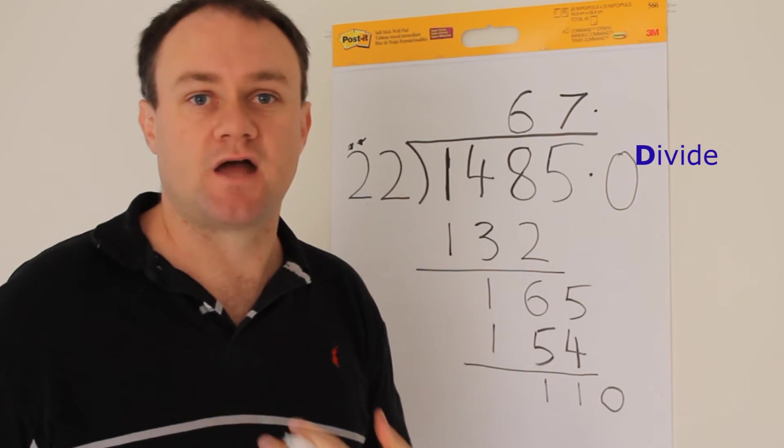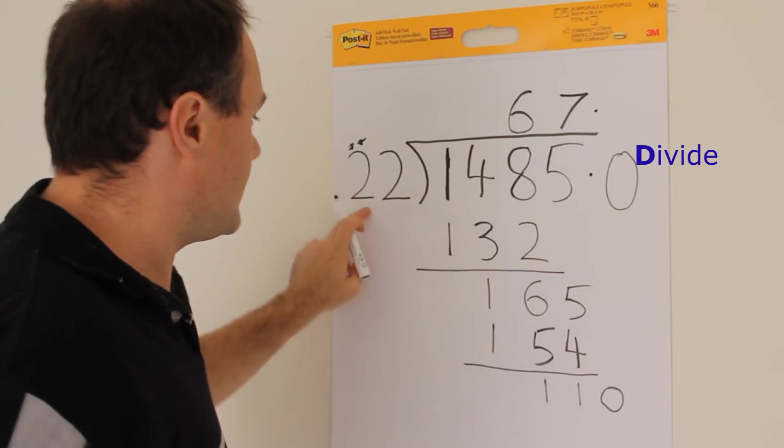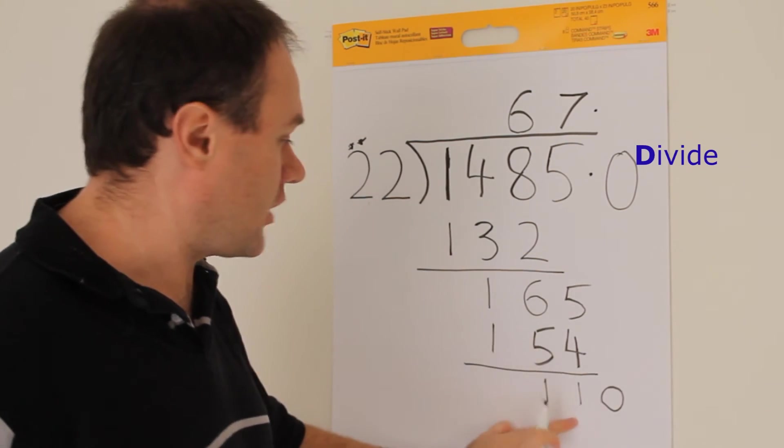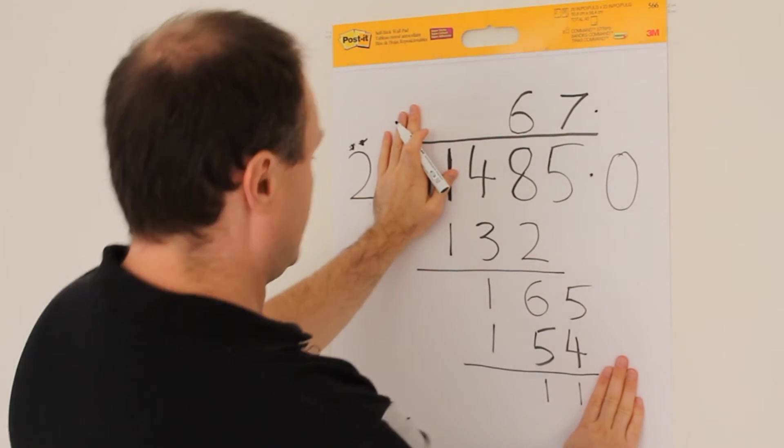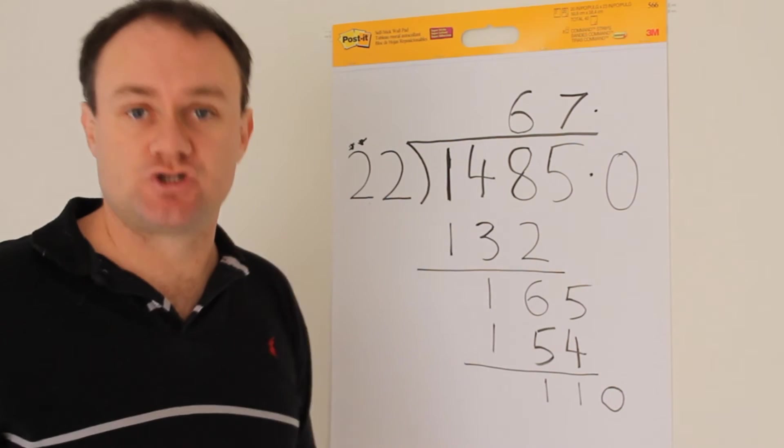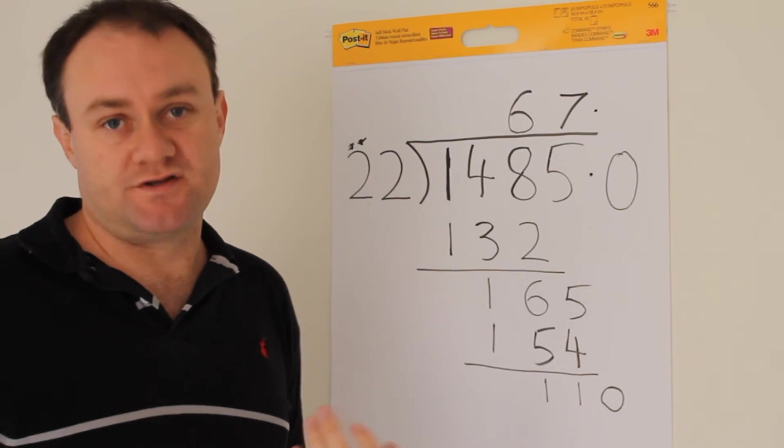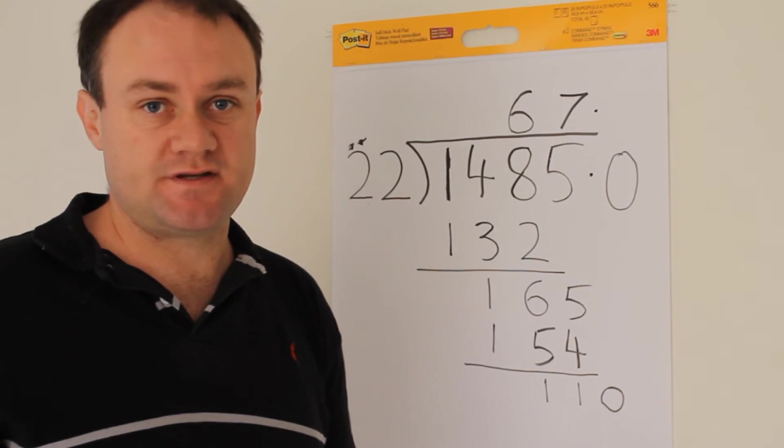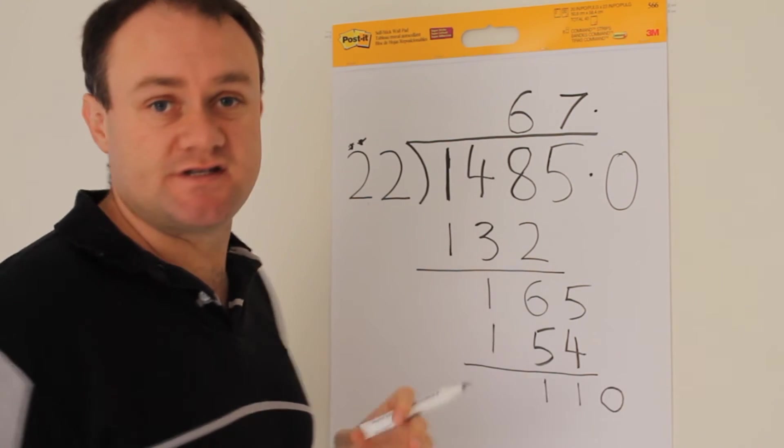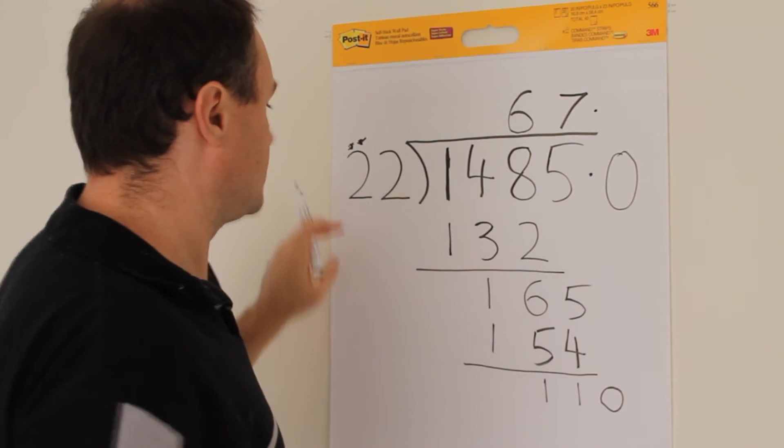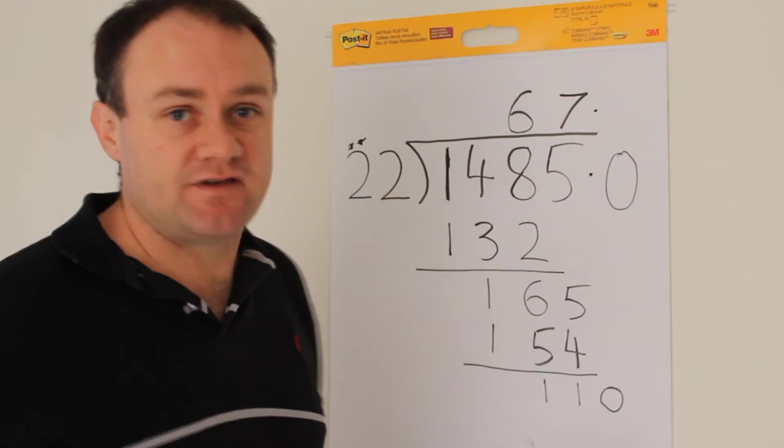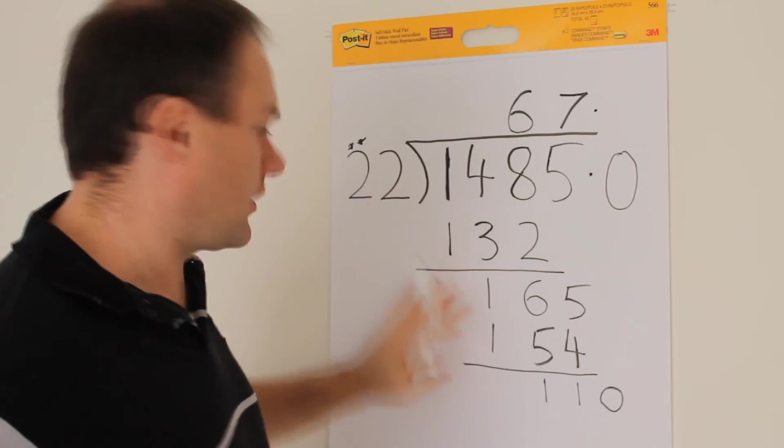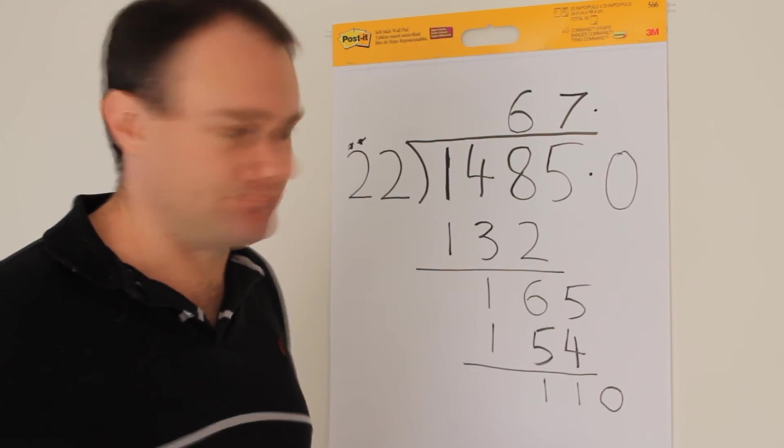And so we're back to the top, and we divide. How many times does 22 go into 110? Well, using the rule of thumb before, covering up, covering up, how many times does 2 go into 11? Well, it's only going to go in 5 times. If I know that 5 twos are 10, I know that 5 twenties are 100. So I can sort of say, this time I'm going to be happy with the 5. It looks like it's going to end up pretty neatly.